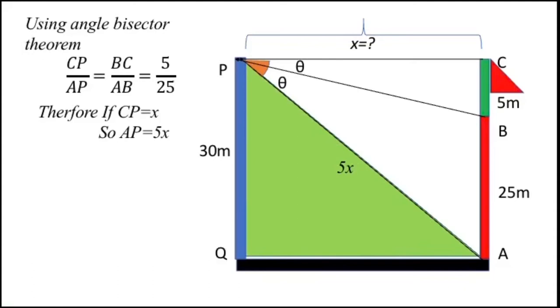Using the Pythagorean theorem in this triangle, (5x)² = x² + 30². On simplifying, 24x² = 30².